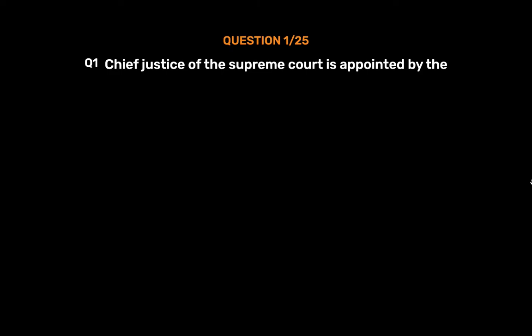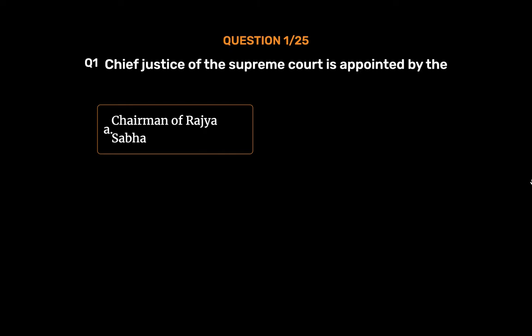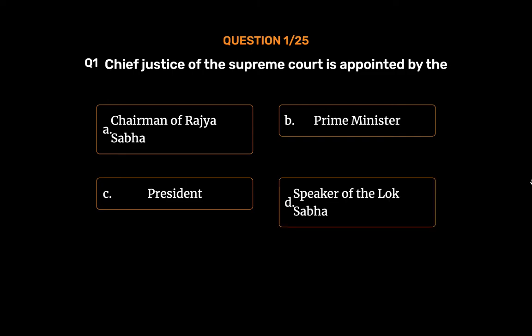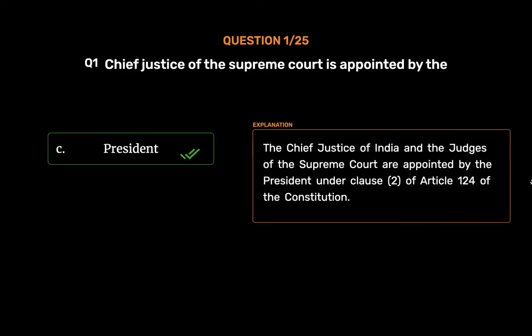Question No. 1: Chief Justice of the Supreme Court is appointed by — Option A: Chairman of Rajya Sabha, Option B: Prime Minister, Option C: President, Option D: Speaker of the Lok Sabha. The correct answer is Option C, President. The Chief Justice of India and the judges of the Supreme Court are appointed by the President under Clause 2 of Article 124 of the Constitution.